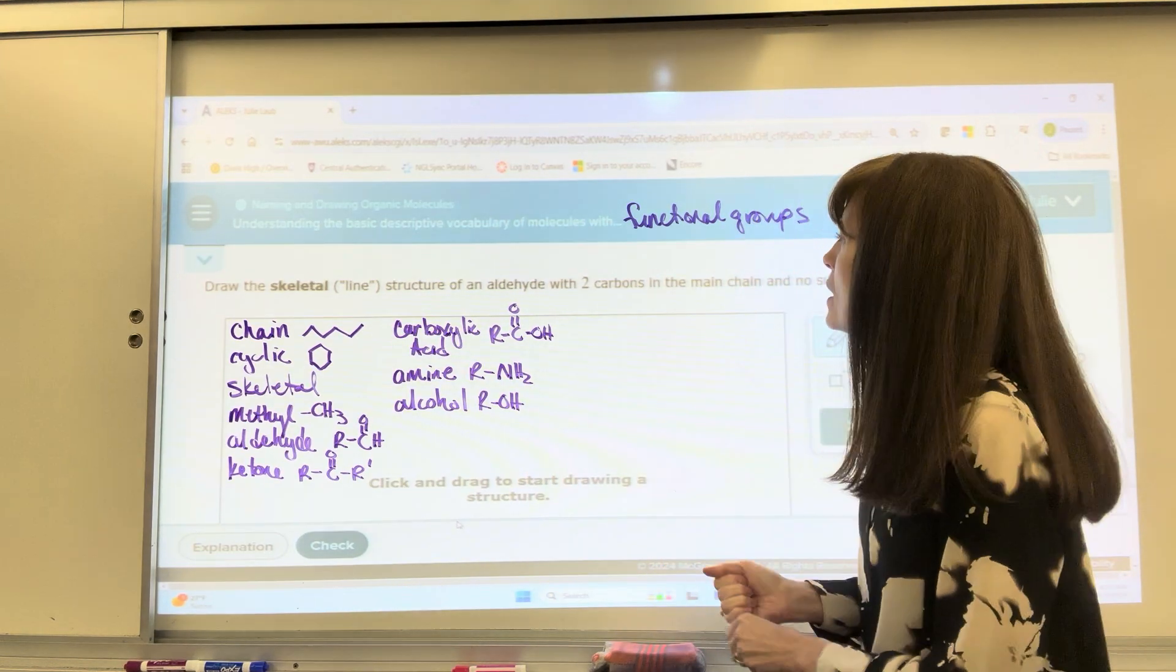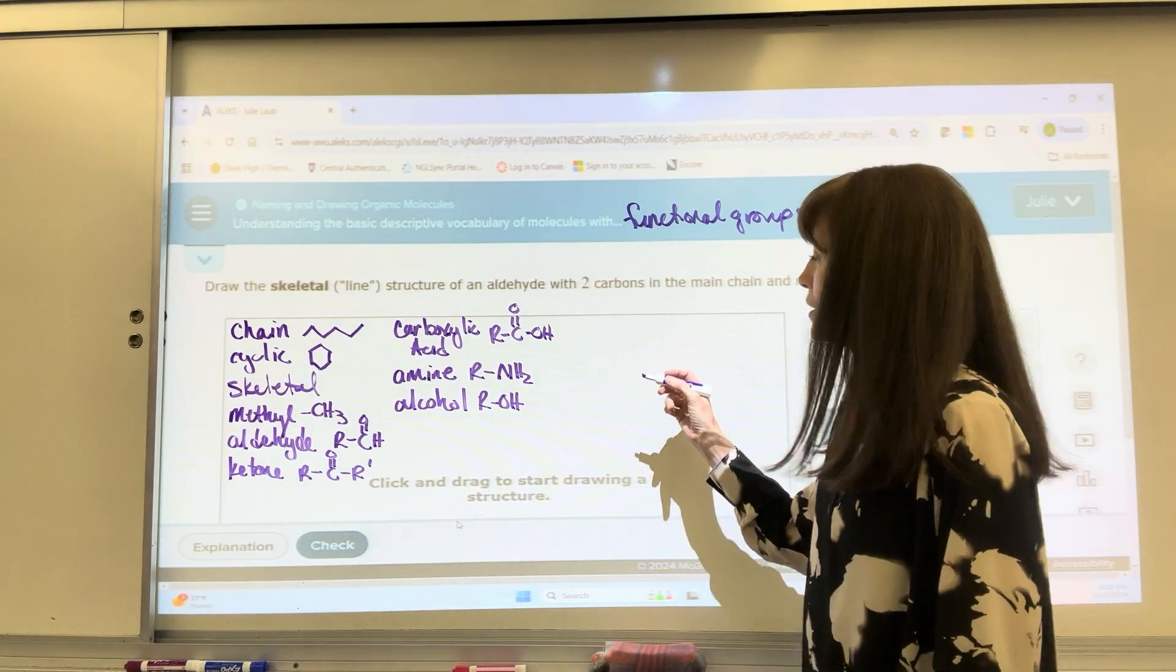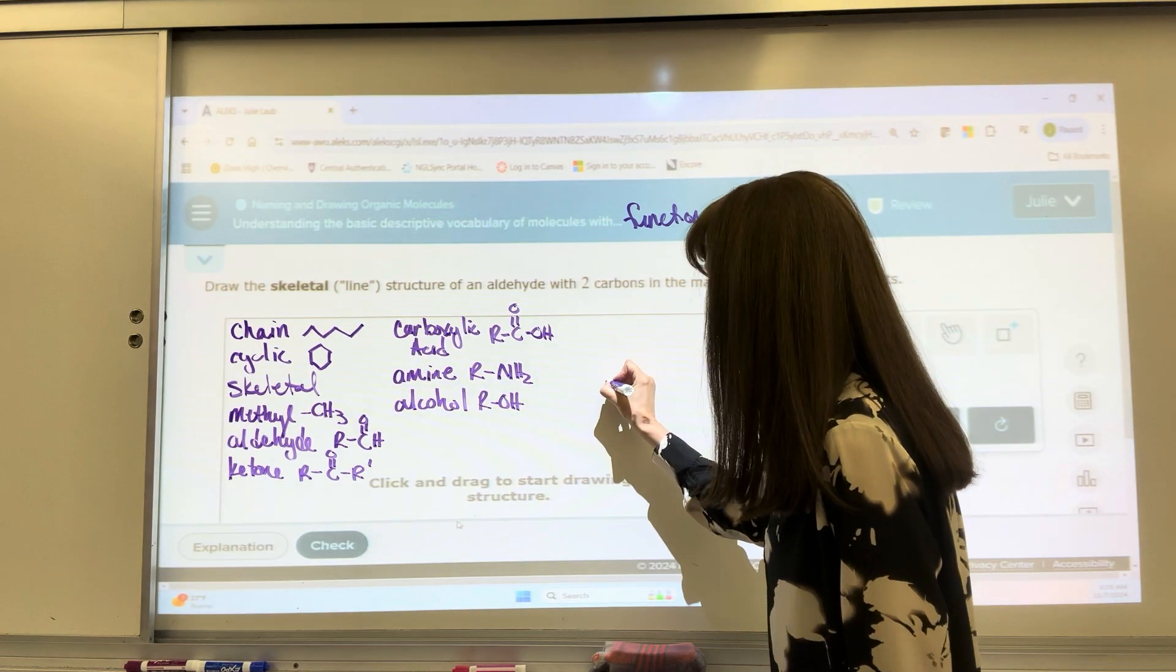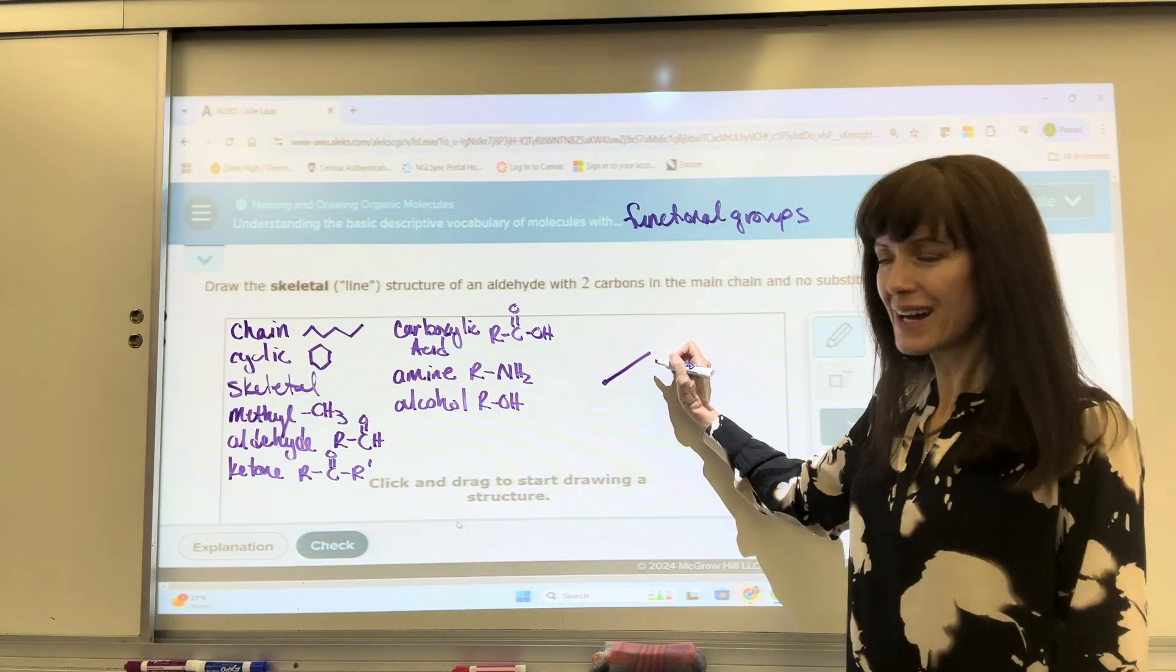So no methyl groups on this. All right, we've got two carbons, and this is an aldehyde. So I'm going to do, here's my first carbon. So the one, two, now an aldehyde.